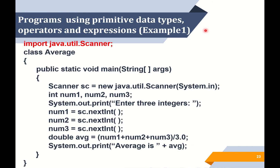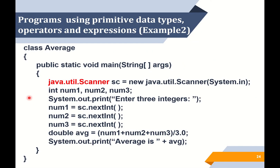This is the example of a program using primitive data type operators and expressions. For example one, we write 'import java.util.Scanner' at the top of the program, followed by the class declaration. And for example two, we write 'java.util.Scanner' inside the method main. So we can use two ways of writing the import for Java Scanner.